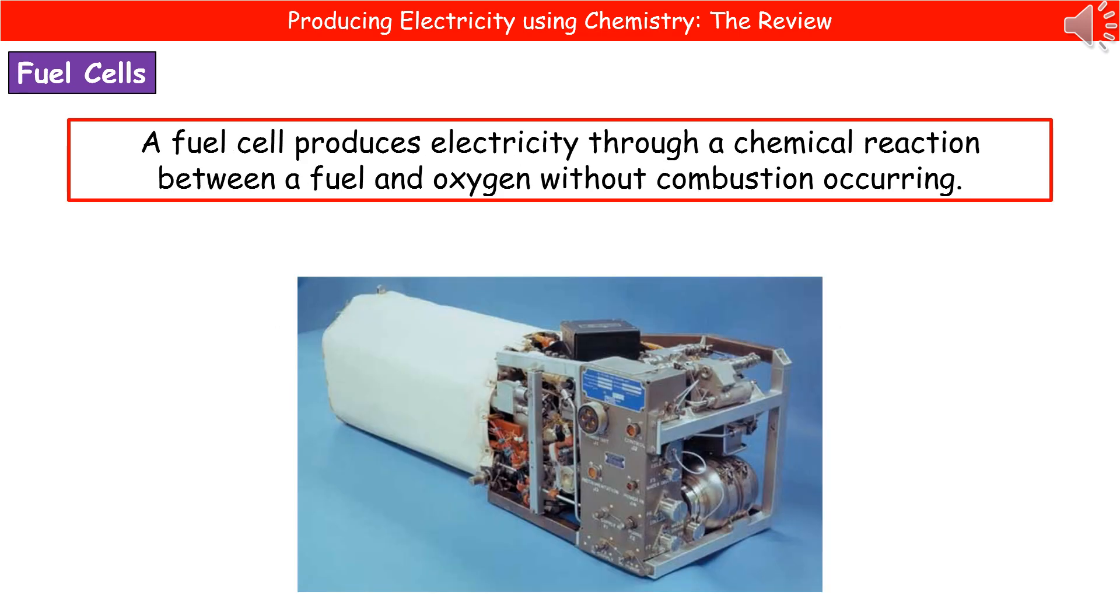Another kind of cell that we can use is a fuel cell. A fuel cell produces electricity through a chemical reaction between a fuel and oxygen but without combustion occurring, so we don't have to burn the fuel in oxygen to make it work.